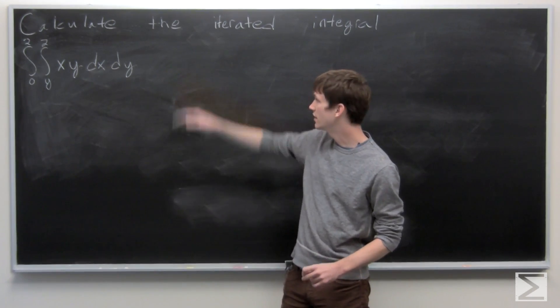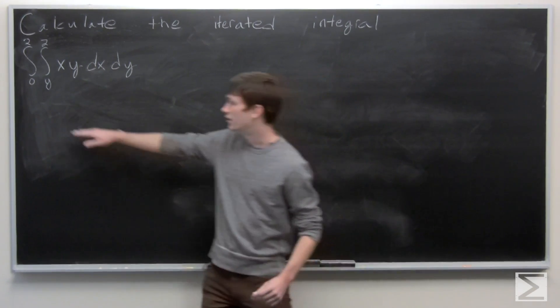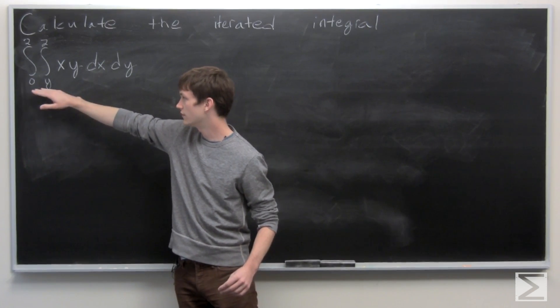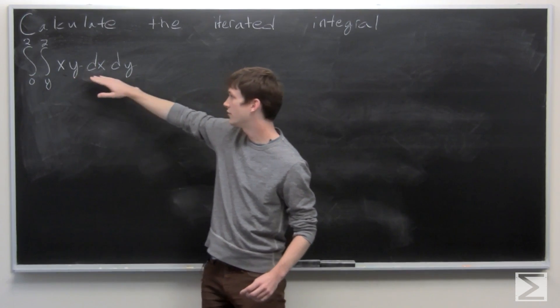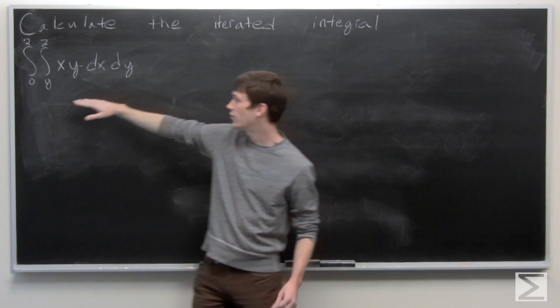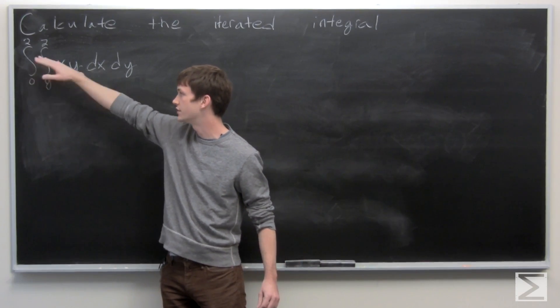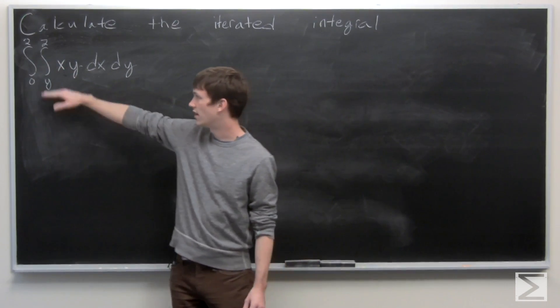In this problem we're asked to calculate the iterated integral of x times y with respect to x and then y, where our integral is from 0 to 2 and y to 2.